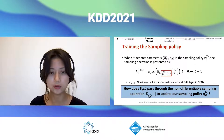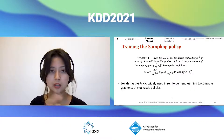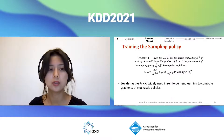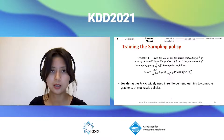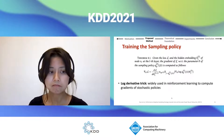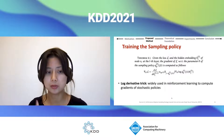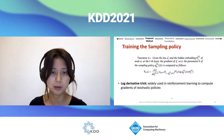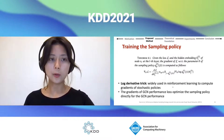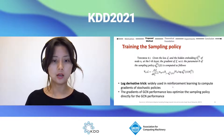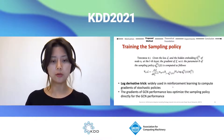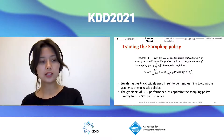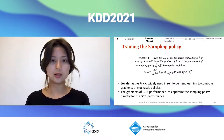How can we pass gradients through the non-differentiable sampling operation? We answer this in Theorem 4.1 — details are in our paper. Simply, we apply the log derivative trick, which is widely used in reinforcement learning to compute gradients of stochastic policies. By Theorem 4.1, the gradient of GCN's performance loss passes to the sampling policy and optimizes it directly for GCN performance.